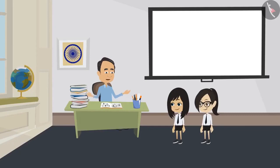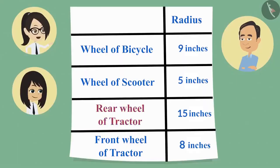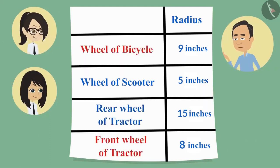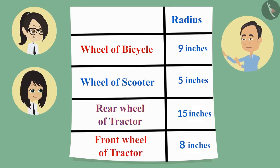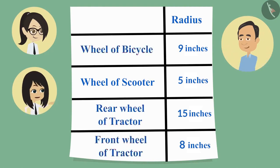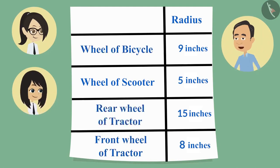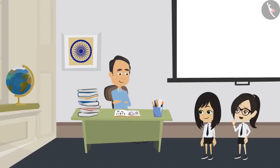Which wheel had the largest circle? The rear wheel of the tractor had the largest circle. Which was smaller — front wheel of the tractor or the bicycle? I thought you were looking at the measurements of the radii. Sir, how can we tell whether a circle is small or big just by measuring the radius?